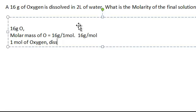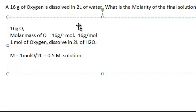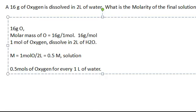That one mole of oxygen is dissolved in two liters of H2O. So going back to the formula, molarity equals one mole of oxygen divided by two liters of water. That gives you a 0.5 molar solution — very easy, very straightforward. In other words, you have 0.5 moles of oxygen for every one liter of water.